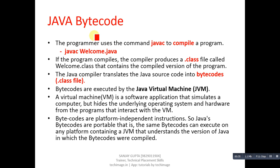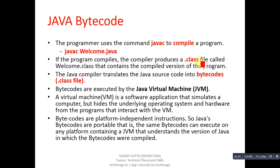Coming to the first topic — Java bytecode. As you have studied C and C++ programming languages, you might have heard the word 'object code.' That object code is received after the compilation process. In Java, whenever we compile any source code, the compiled code is received in terms of bytecode. The programmer uses the command 'javac' to compile a Java program, written as: javac filename.java.